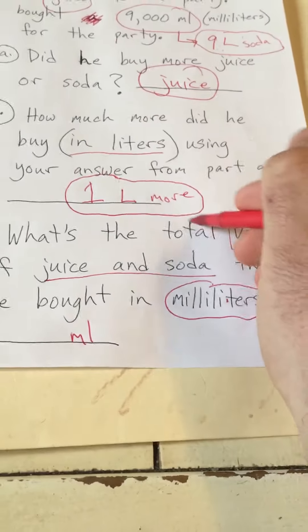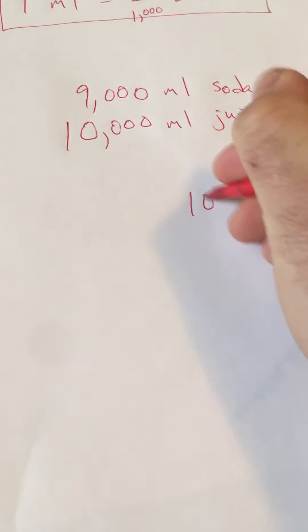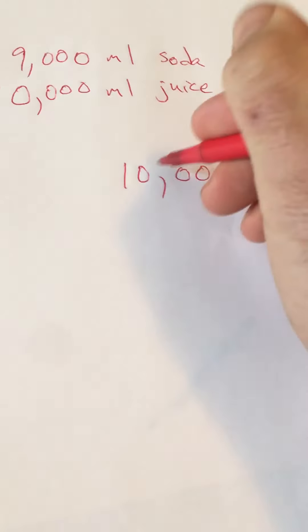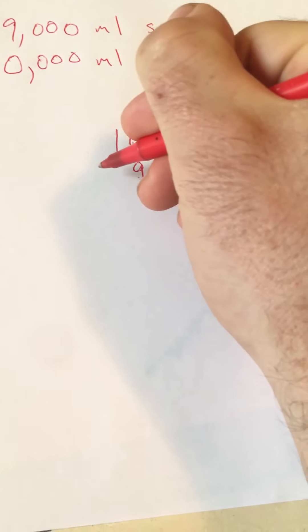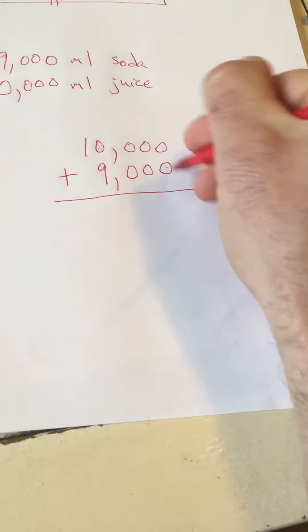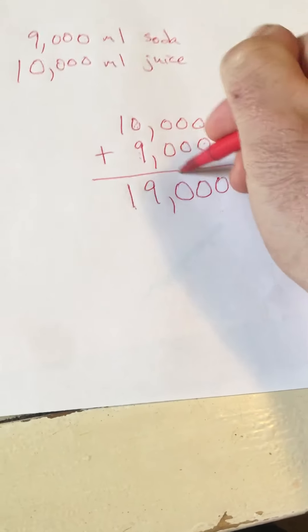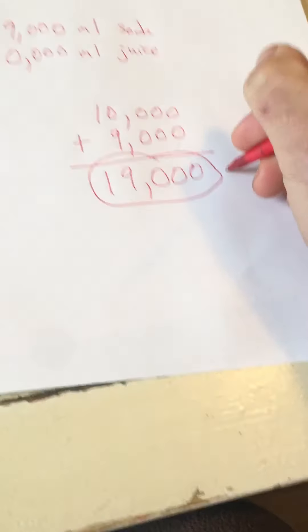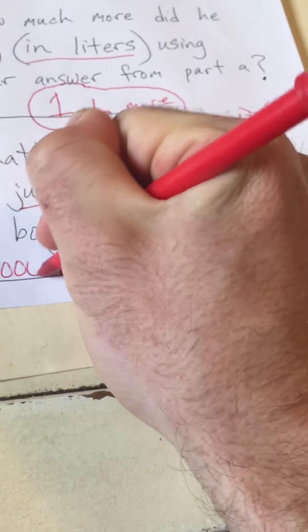Now we need to find the total, so we add soda plus juice. I'll rewrite these so place values are directly on top of each other: 10,000 plus 9,000, making sure the nine is in the one-thousands place right underneath the zero. Ten thousand plus nine thousand: zero, one, zero, ten, zero hundreds, nine thousands, and one ten-thousand — that makes 19,000 milliliters.